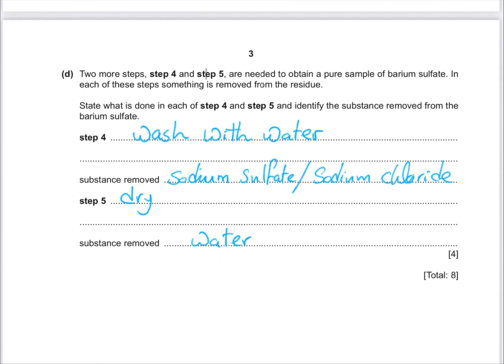Two more steps, step 4 and step 5, are needed to obtain pure crystals of barium sulfate. In each of these steps, something is removed from the residue. State what is done in each step and identify the substance removed from barium sulfate. In step 4, wash with water.